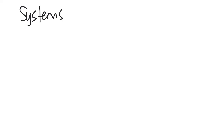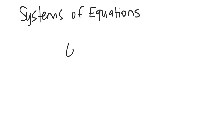Today we're going to review solving systems of equations, like we started to do on Friday. I'm going to give one example, we'll work through it, and then you'll have an assignment with more problems. So say I have the system: 6x minus 2y equals 10.